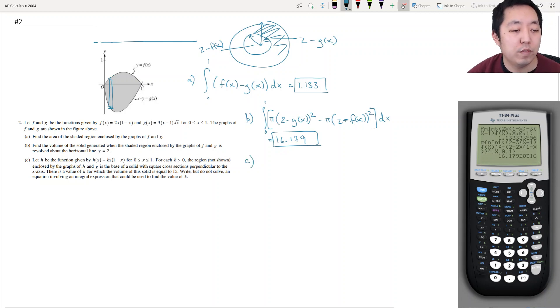Let h be the function given by h of x equals kx(1 minus x). For each k greater than 0, the region enclosed by the graphs of h and g is the base of a solid with square cross-sections perpendicular to the x-axis.